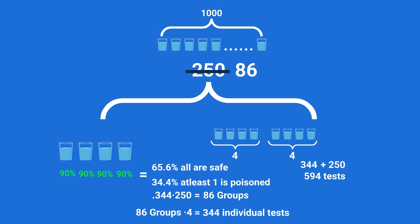Instead of groups of four we'll call it groups of n, thus there are a thousand over n groups and a thousand over n tests we have to do at first. Now we again have to find how many of these groups will remain after we remove the ones with only safe drinks.